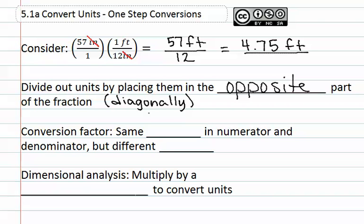A conversion factor is something with the same value in the numerator and the denominator, but it will have different units. As you can see, the conversion factor here, 1 foot and 12 inches are both the same value, but they are very different units.